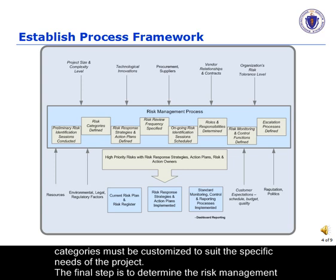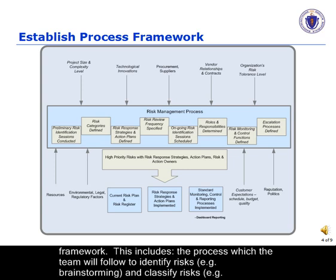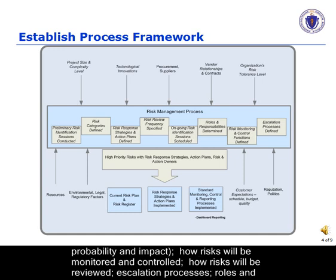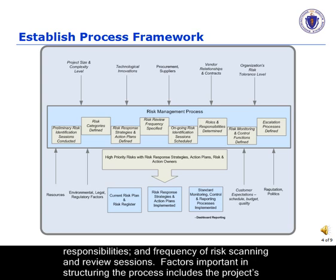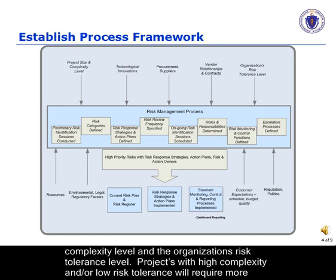The final step is to determine the risk management framework. This includes the process which the team will follow to identify risks — for example, brainstorming — and classify risks — for example, probability and impact. How risks will be monitored and controlled, how risks will be reviewed, escalation processes, roles and responsibilities, and frequency of risk scanning and review sessions. Factors important in structuring the process include the project's complexity level and the organization's risk tolerance level.